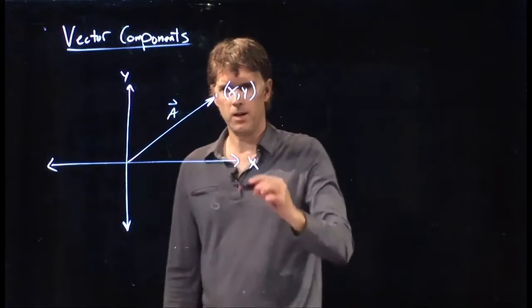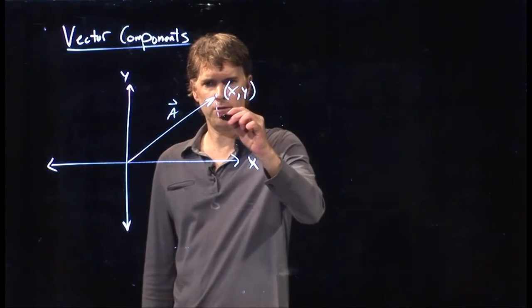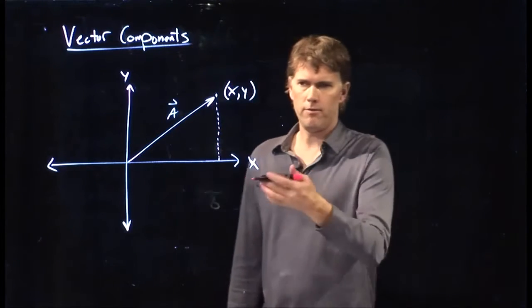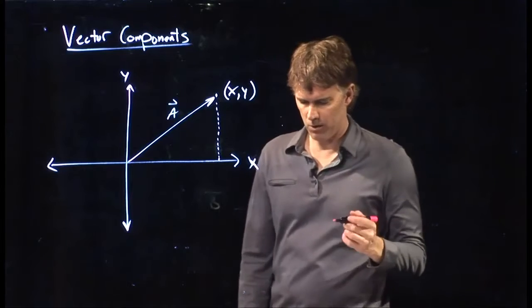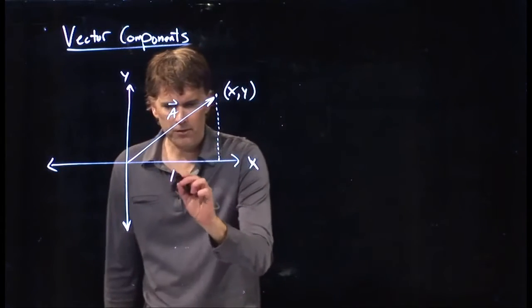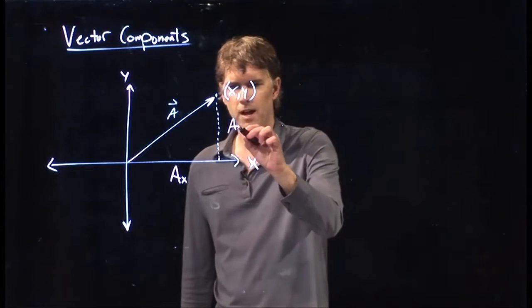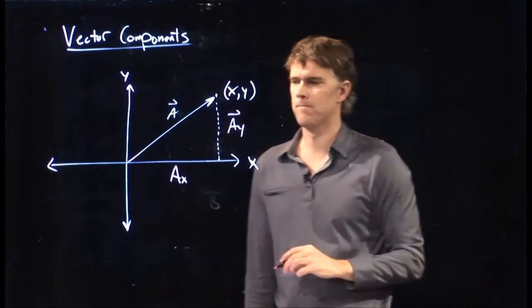We know exactly what x and y are. X is how far did I go across in x. Y is how far up did I go in y. And so this side is A_x, and this side is A_y.